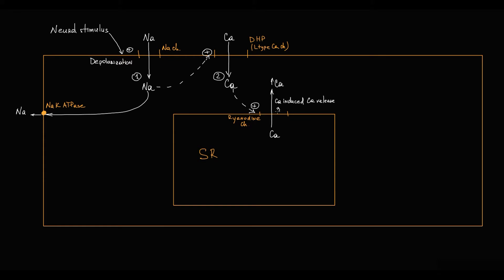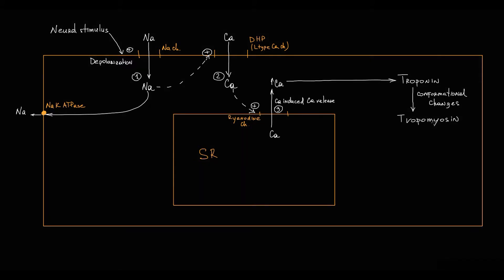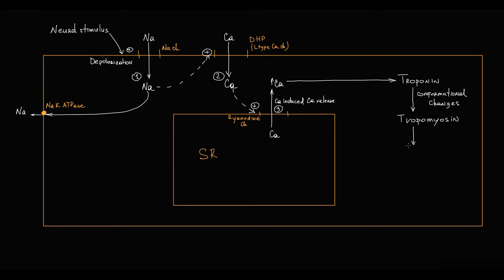Calcium binds to the troponin molecule. Troponin induces conformational changes in tropomyosin. Tropomyosin exposes binding sites on the actin molecule, and this permits the myosin molecule to bind to the actin molecule, creating actin-myosin bonds that subsequently develop peak muscle tension resulting in contraction.